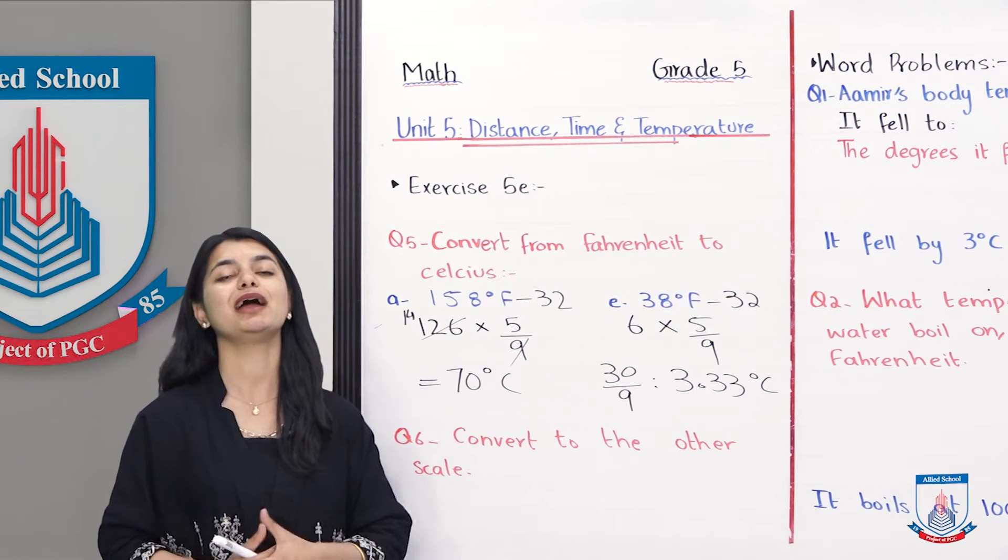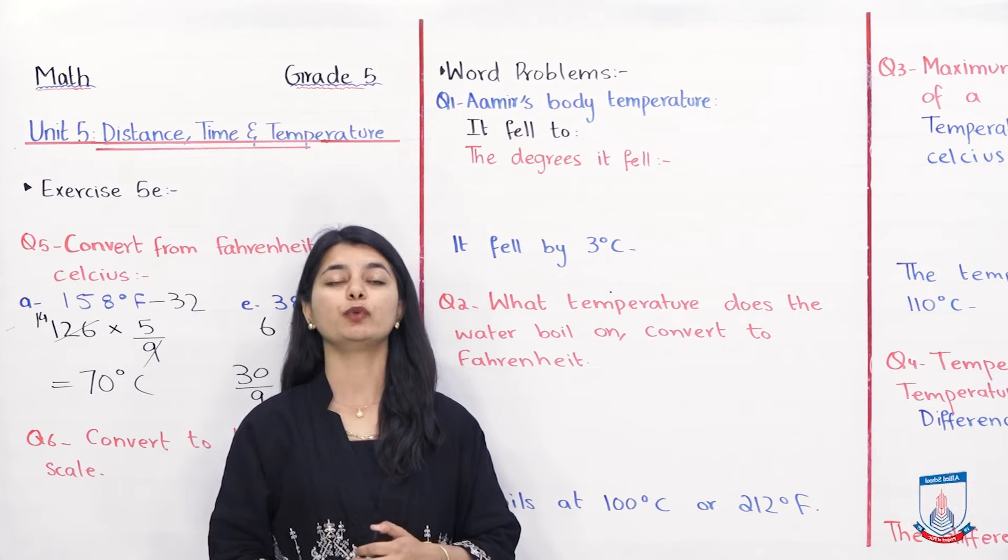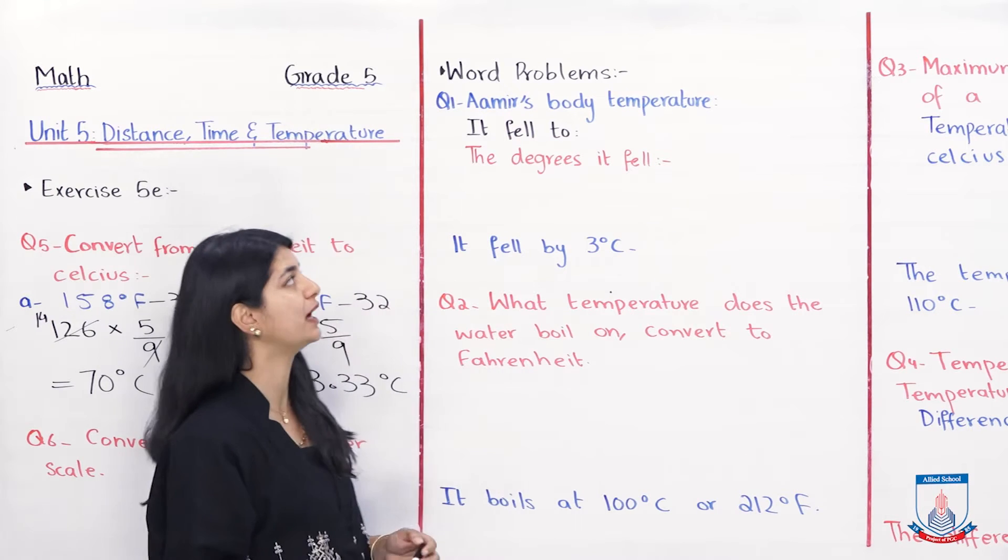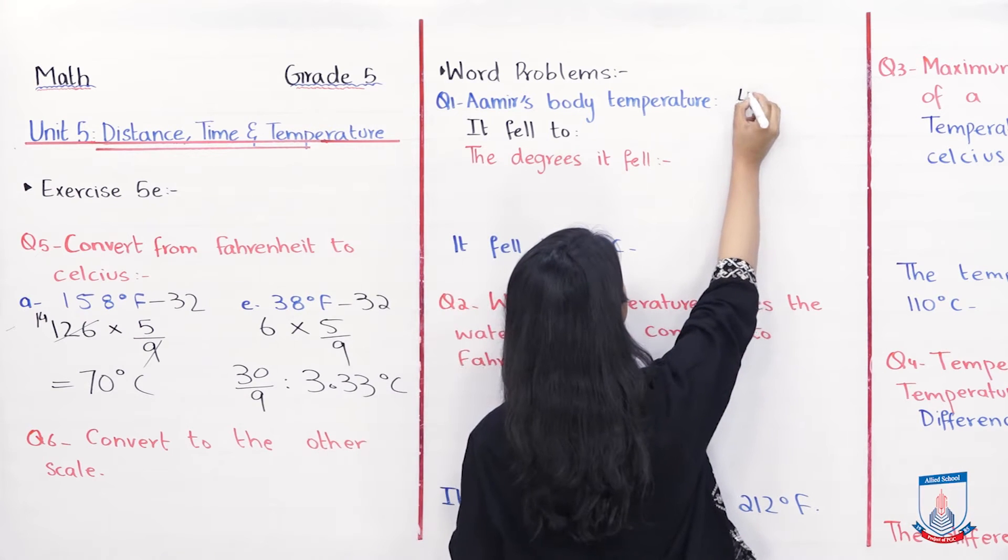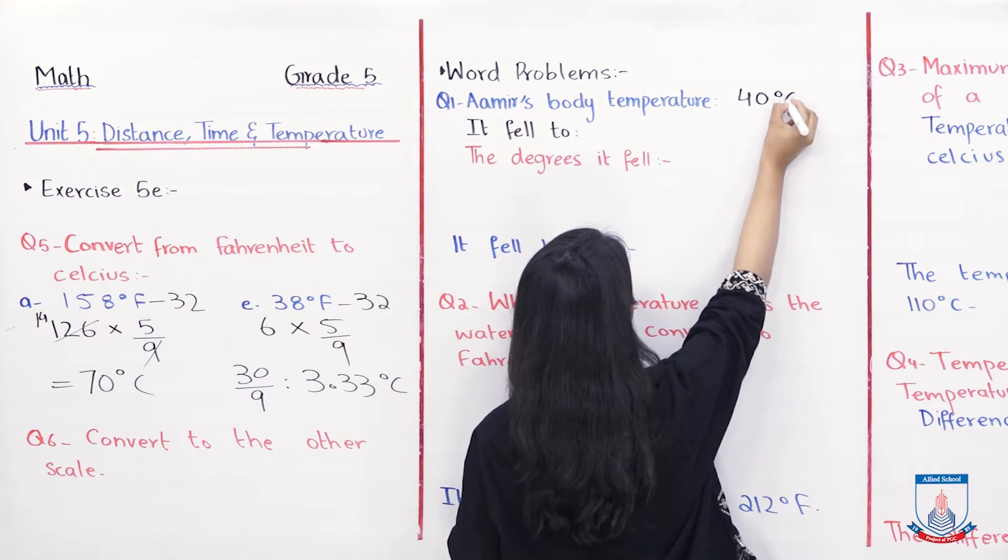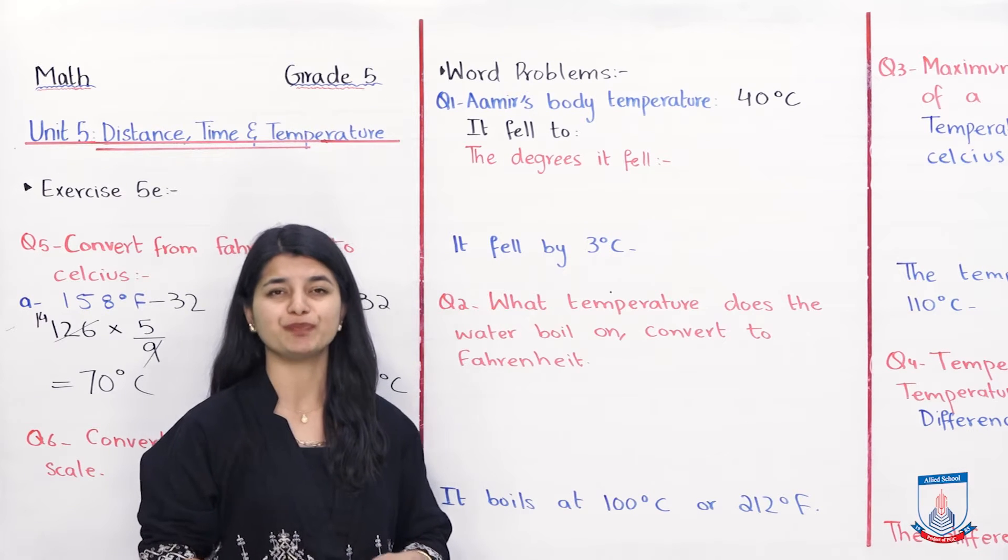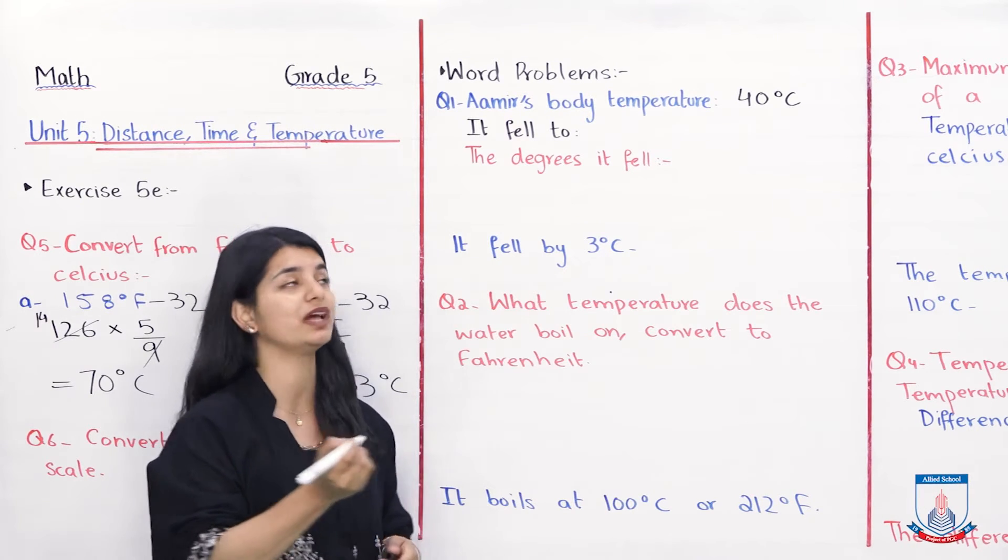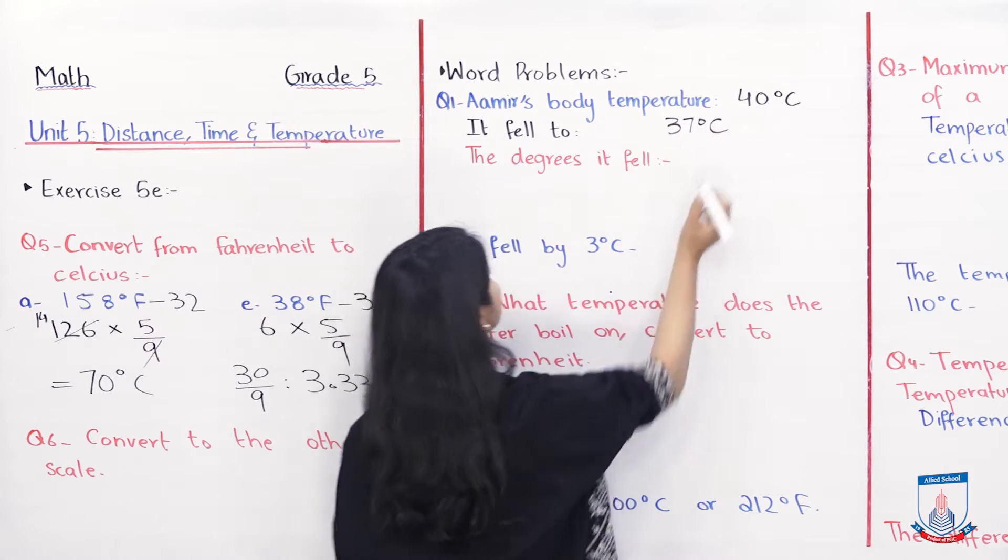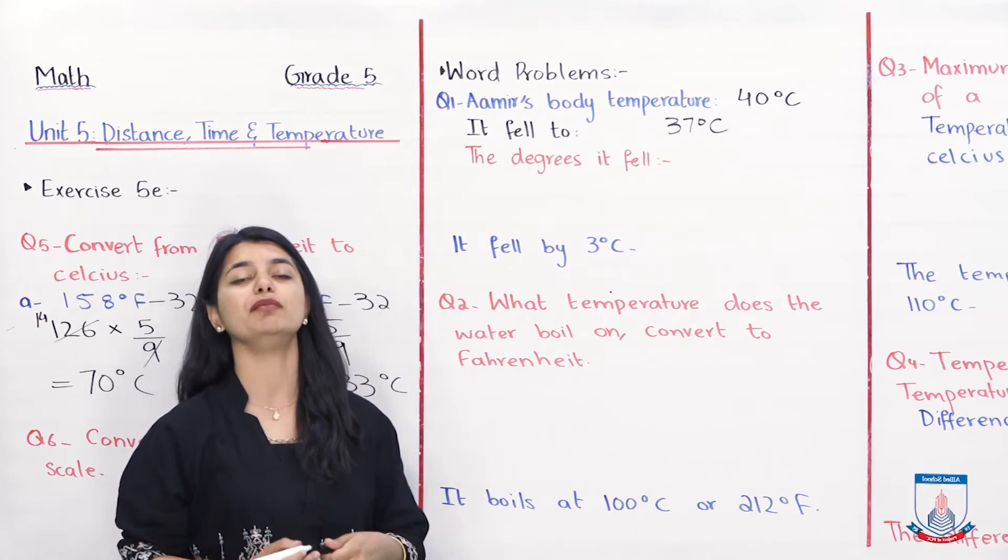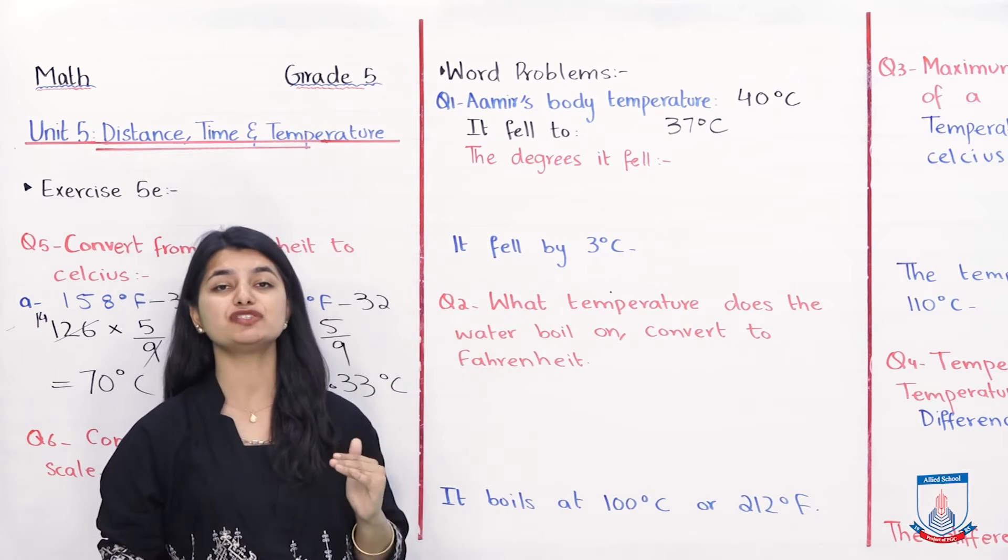Question number one is our word problem. Aamir's body temperature is 40 degree centigrade. They are saying it fell to the normal body temperature. We discussed the normal body temperature is 37 degree centigrade. So when its body temperature is normal, how many degrees have been reduced? When it was 40, it went back to normal 37.